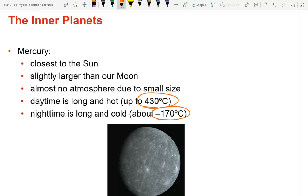So life couldn't exist on Mercury, or at least not our kind of life, in either of those temperature ranges. Mercury is not very hospitable to life. Why does it have such a big temperature change? On Earth it's hotter during the day and cooler at night but not nearly that dramatic. The answer is because Mercury has no atmosphere — it doesn't have something to distribute thermal energy.